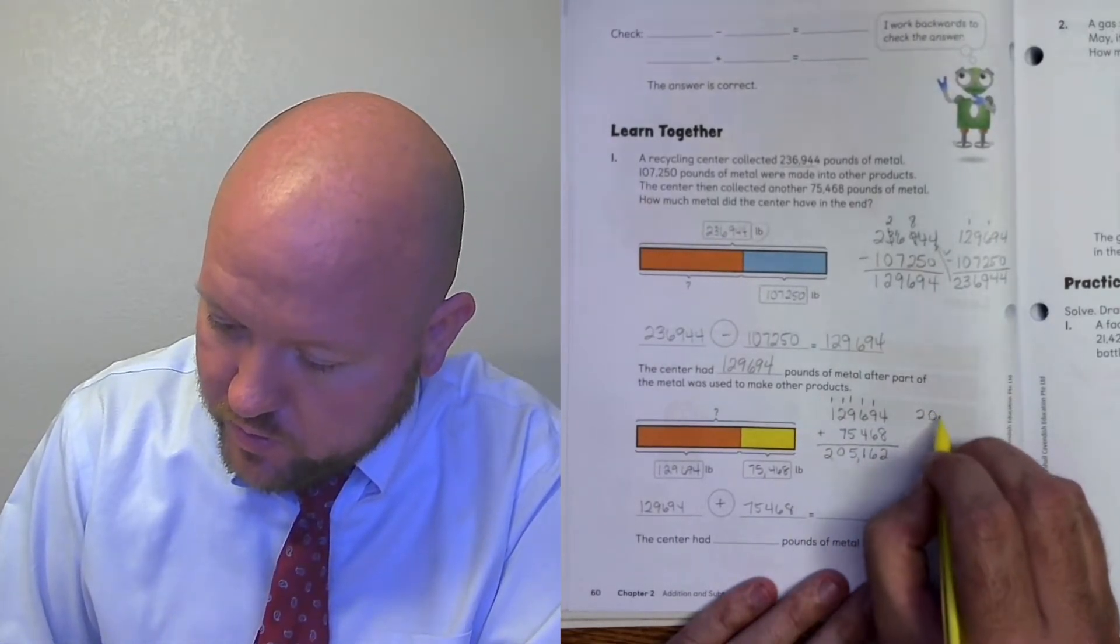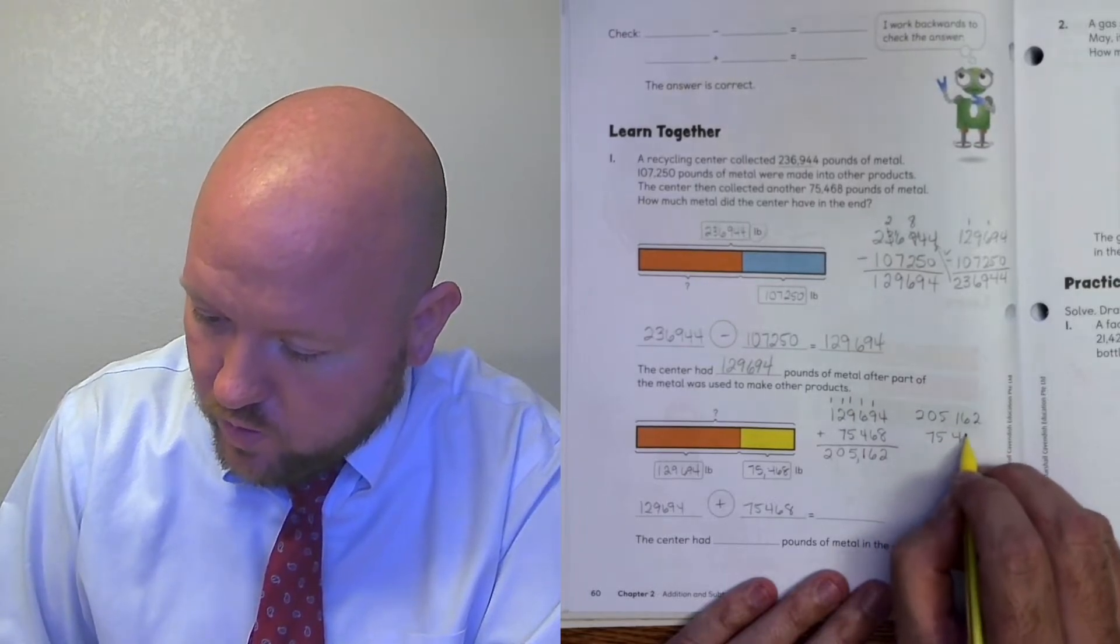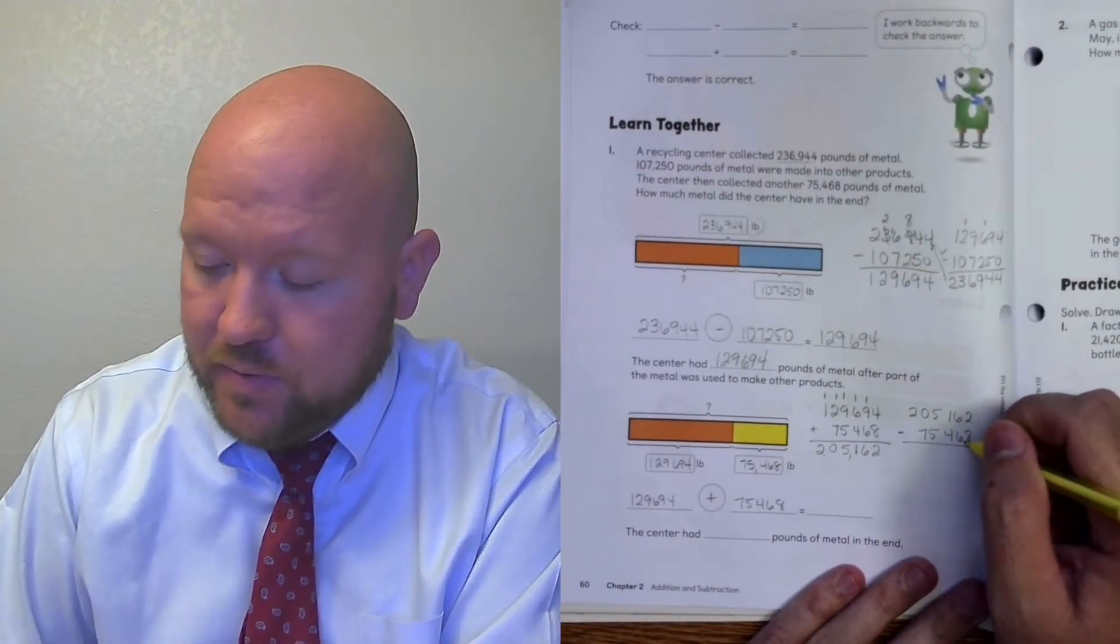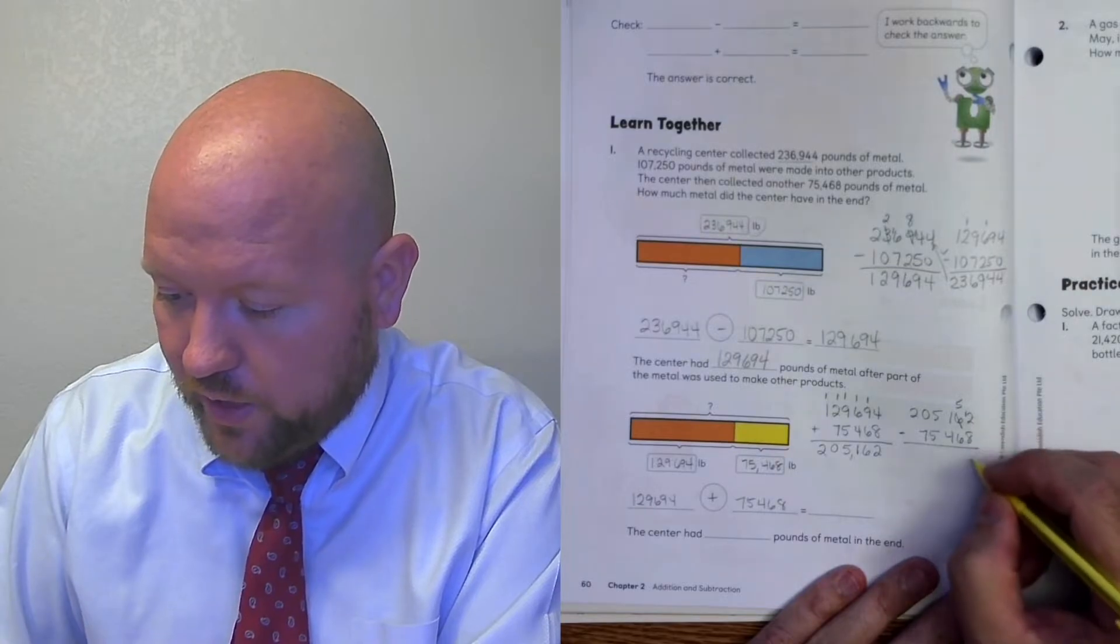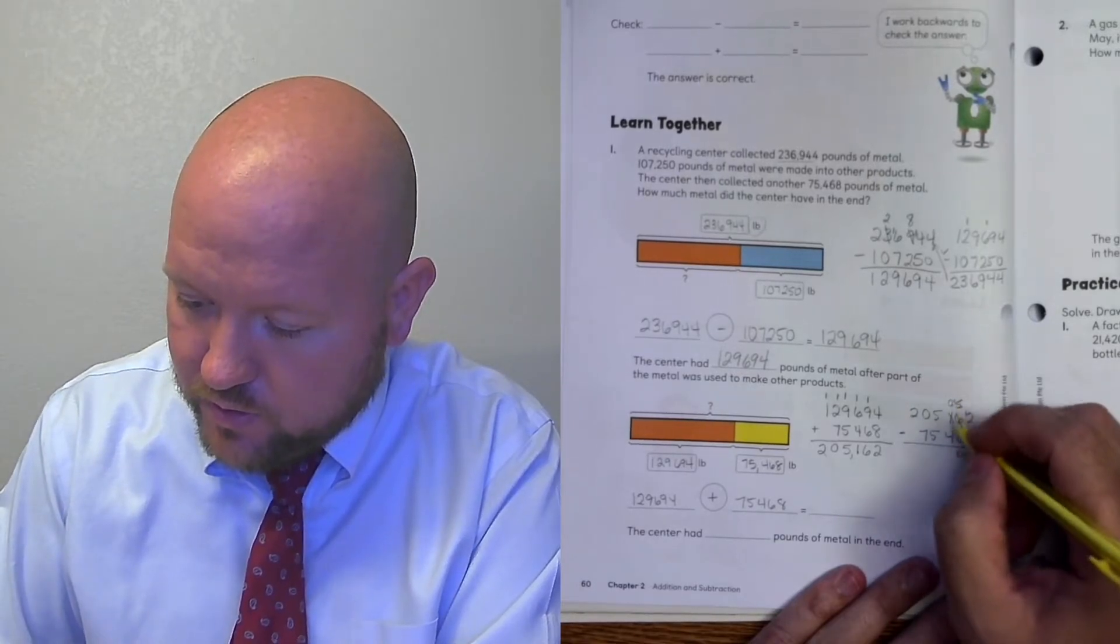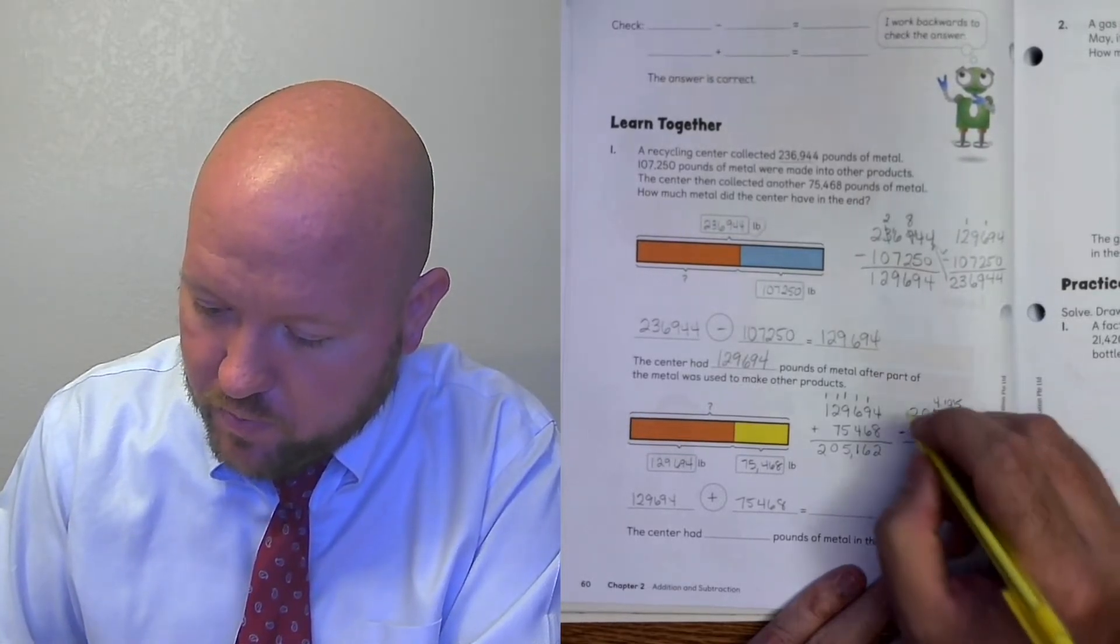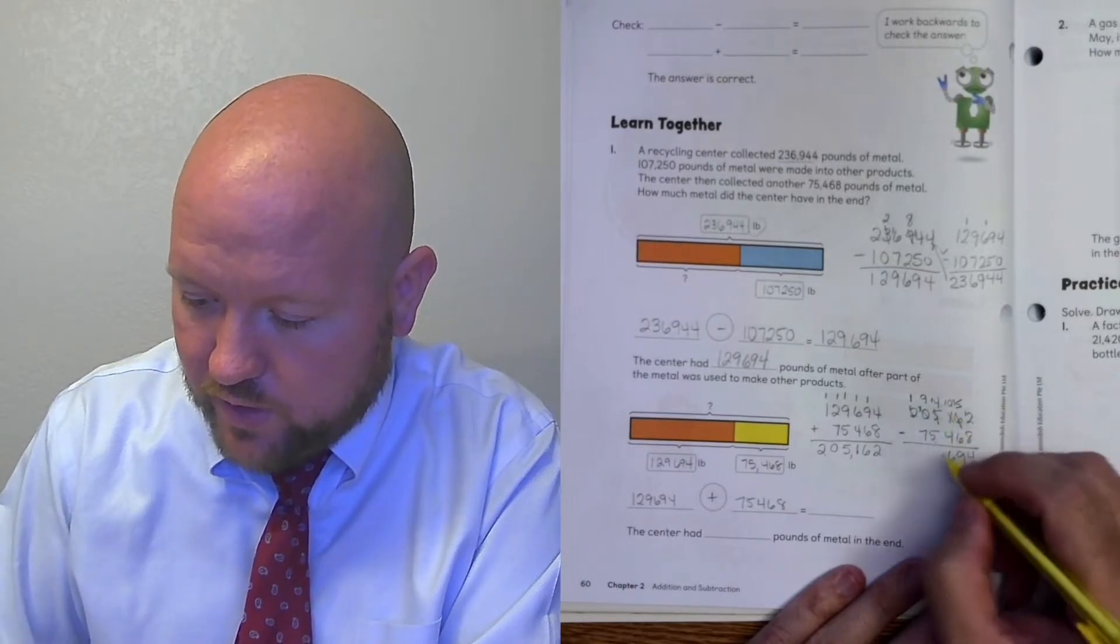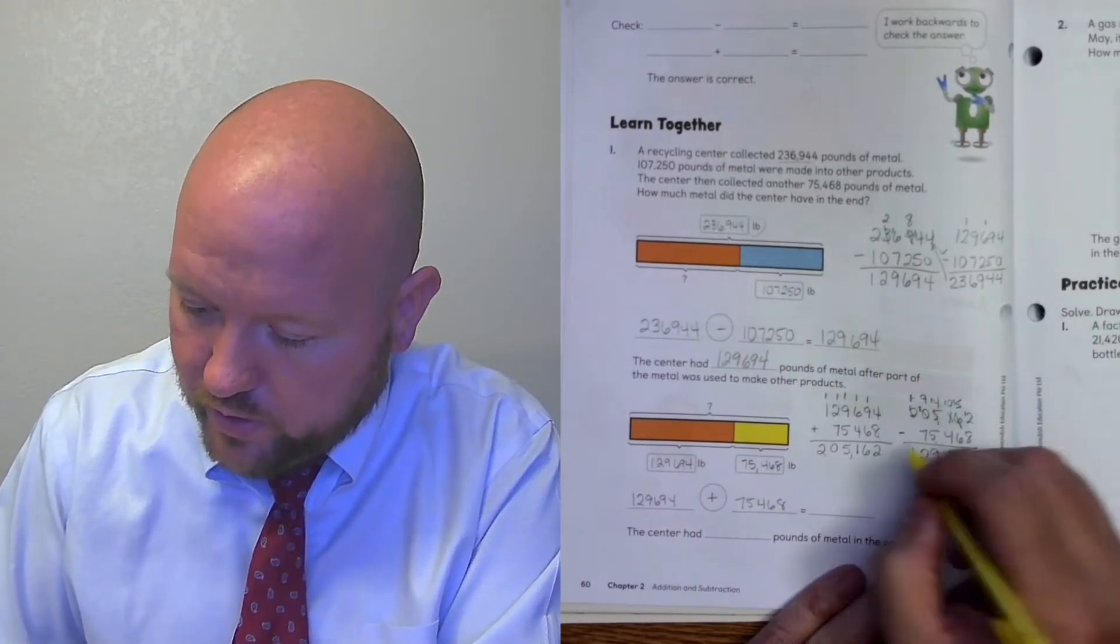All right. Let's check that. 205,162 minus 75,468. 2 minus 8, it'd be negative 6. I need to regroup. This becomes a 5. This becomes a 12. 12 minus 8 is 4. 5 minus 6. I have to regroup. 15 minus 6 is 9. 0 minus 4. I need to regroup. 10 minus 4 is 6. 4 minus 5. I need to regroup. I come all the way over here to the 2. It becomes a 1. This becomes a 10. Cross this side. It becomes a 9. This becomes a 14. 14 minus 5 is 9. 9 minus 7 is 2. 1 minus nothing is 1. These two check out.